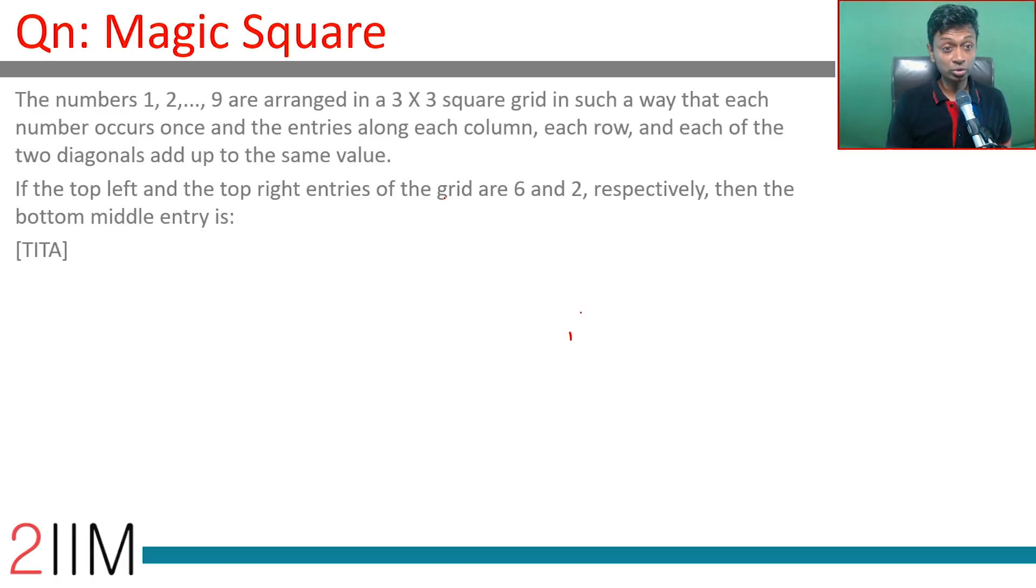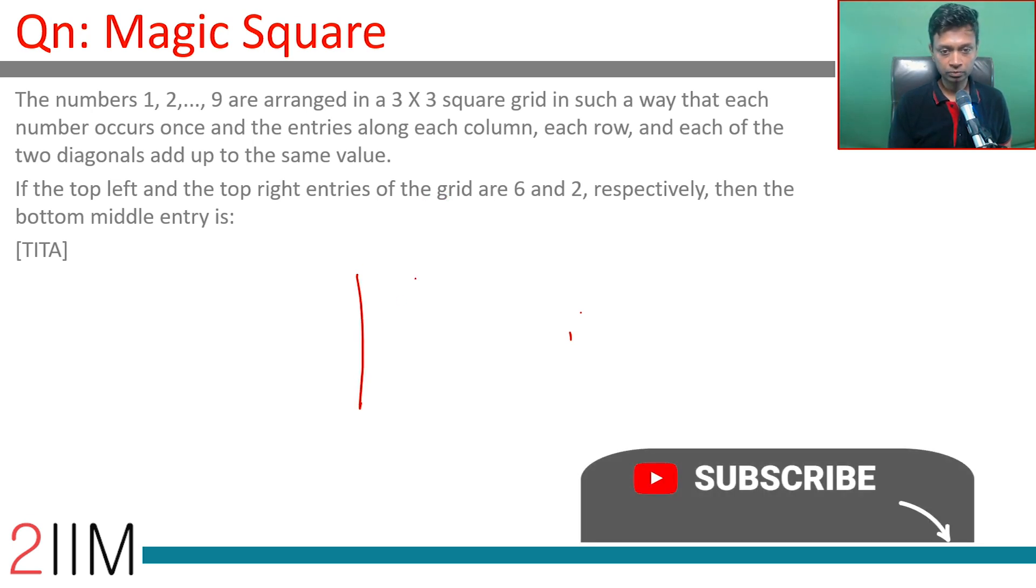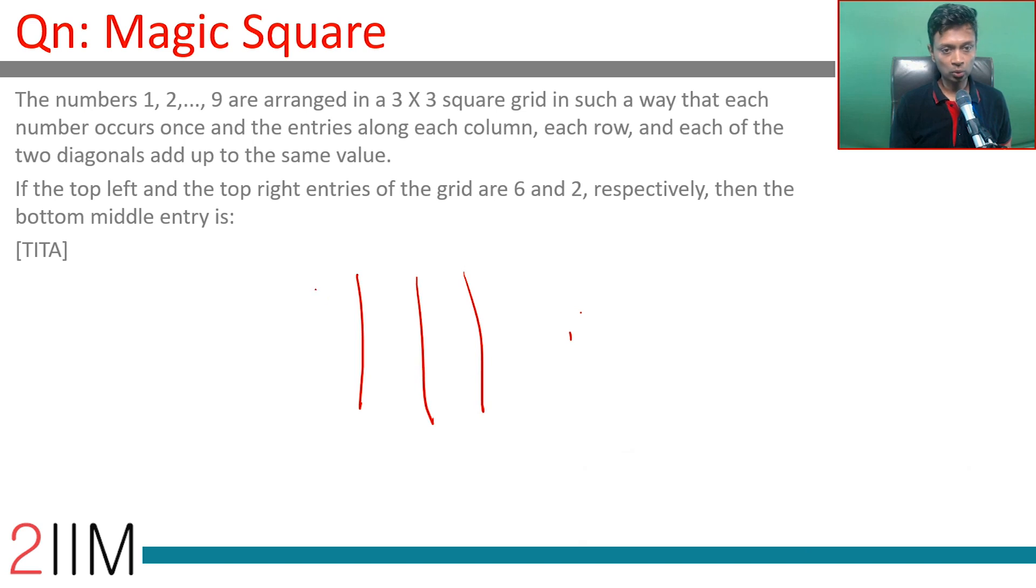Magic square. The numbers 1, 2, 3, 4 till 9 are arranged in a 3 by 3 square grid in such a way that each number occurs once, and the entries along each column, each row, and each of the two diagonals add up to the same value.